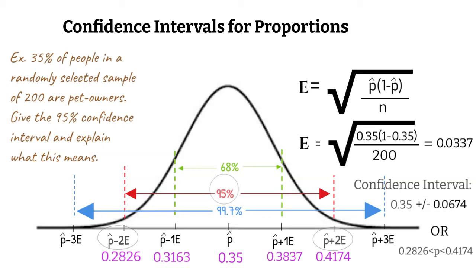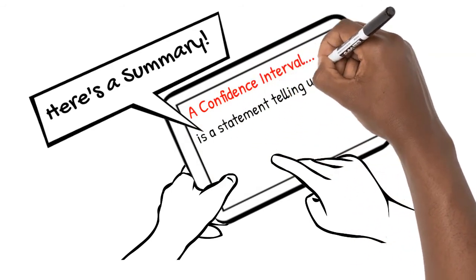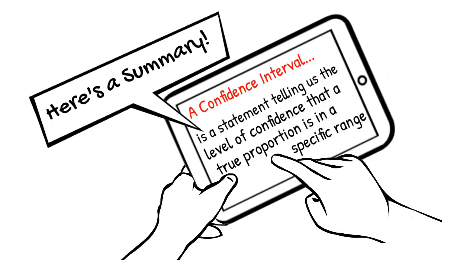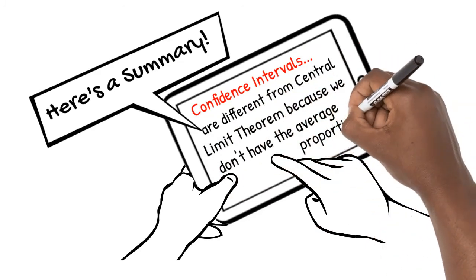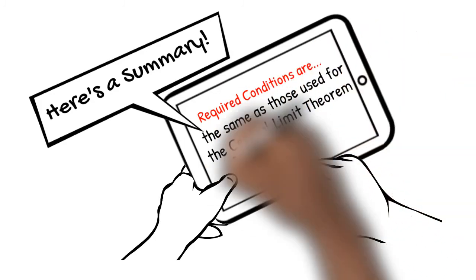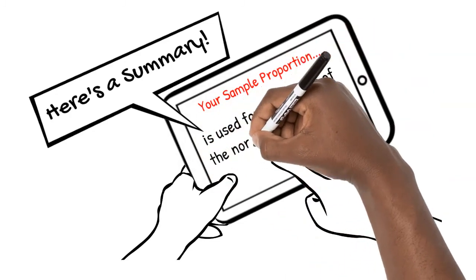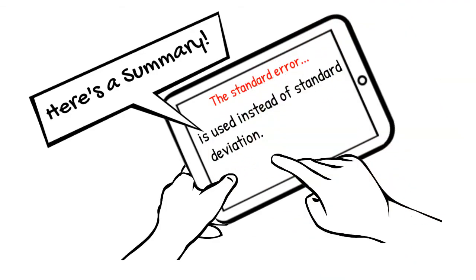Here's a summary of what we've learned. A confidence interval is a statement telling us the level of confidence that a true proportion is in a specific range. Confidence intervals are different from central limit theorem because we don't have the average proportion. Required conditions are the same as those used for the central limit theorem of proportions. Your sample proportion is used for the center of the normal model. The standard error is used instead of the standard deviation.